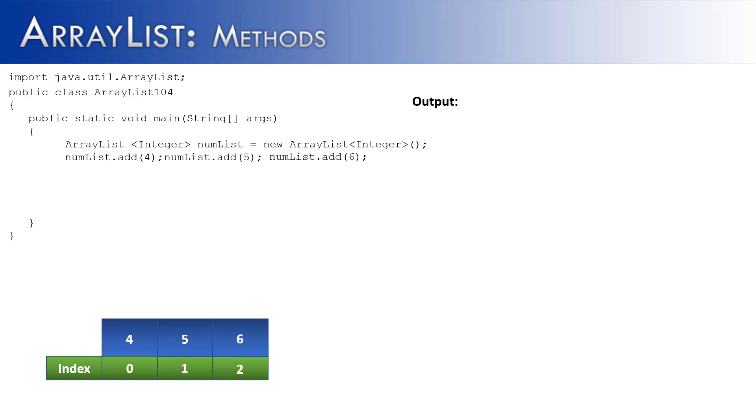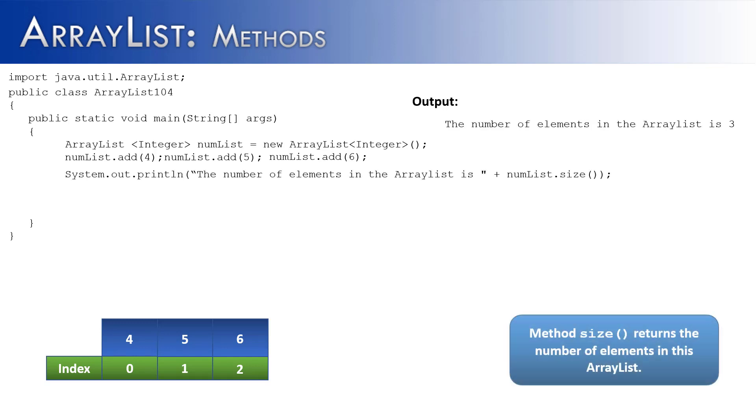We have a setup that we've seen before, numList with the values 4, 5, and 6 added to it. And then in this example, what I'd like to show you is the method size. And what size does is it returns the number of elements in this ArrayList. So the output would be the number of elements in the ArrayList is 3. It doesn't have any parameters, just simply returns the number of elements.